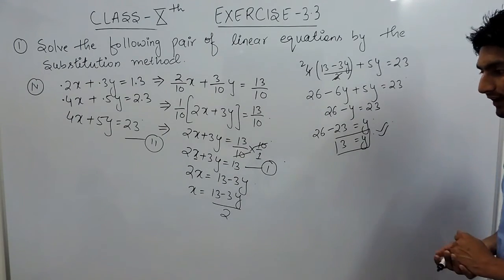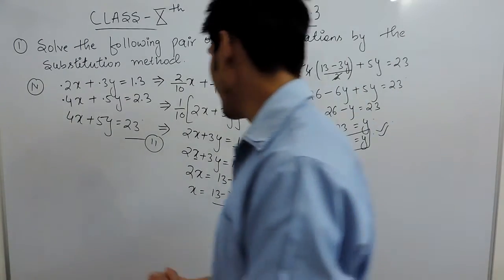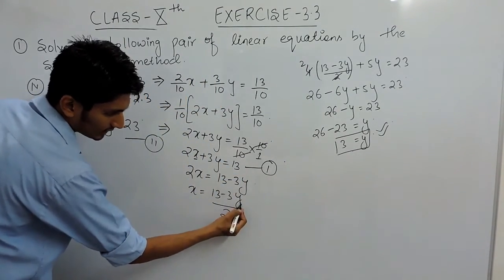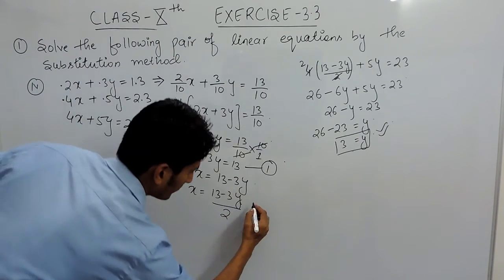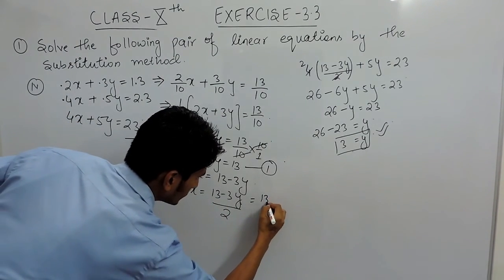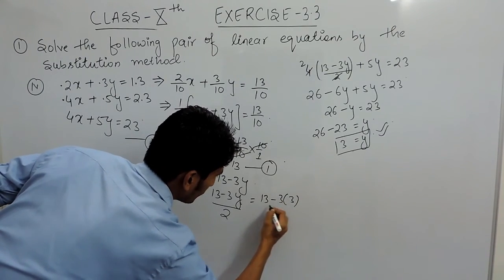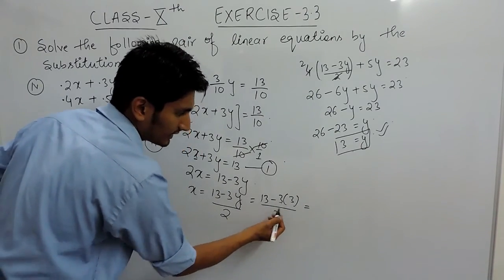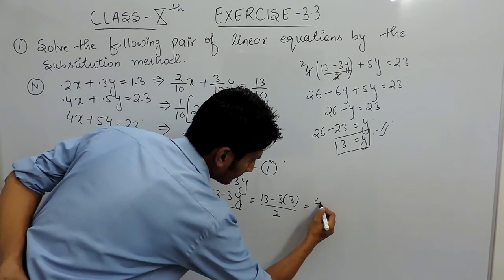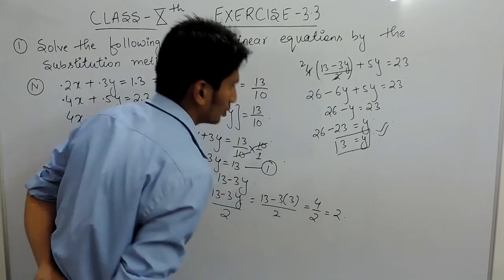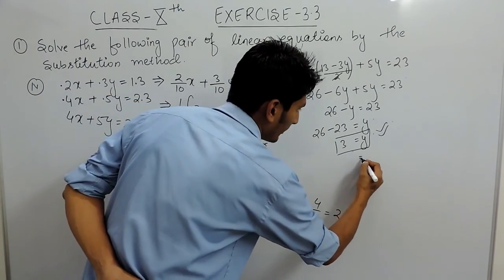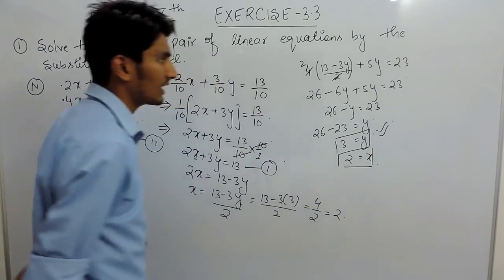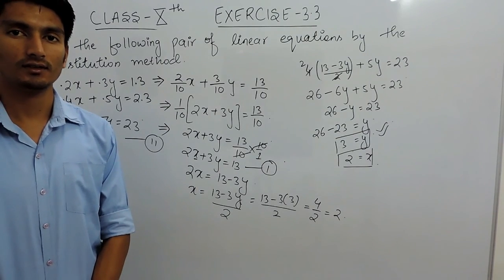Now we found the value of y. To find the value of x, we substitute y equals 3 back into the equation: x equals (13 minus 3 into 3) upon 2. This gives 3 times 3 is 9, and 13 minus 9 is 4, and 4 divided by 2 is 2. So the value of y is 3 and the value of x is 2. This is how you can solve this question. Thank you.